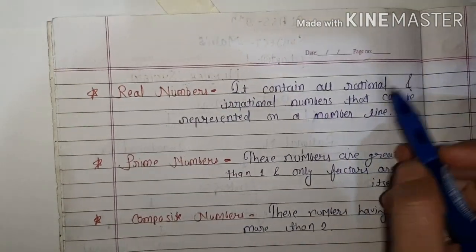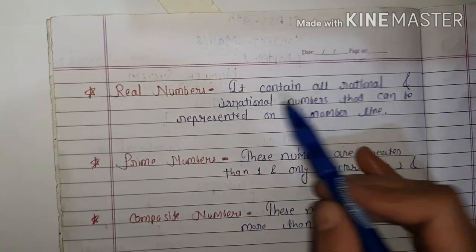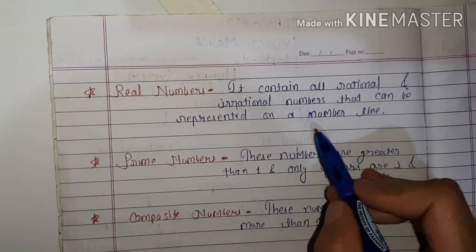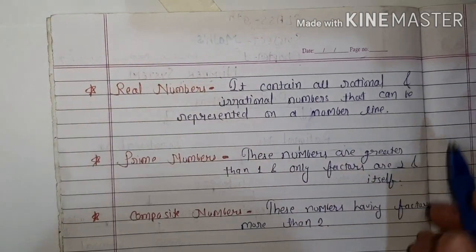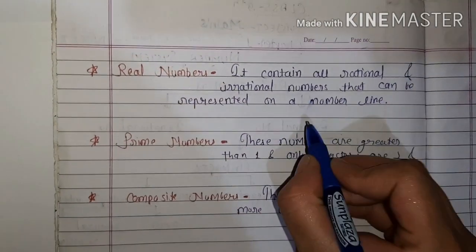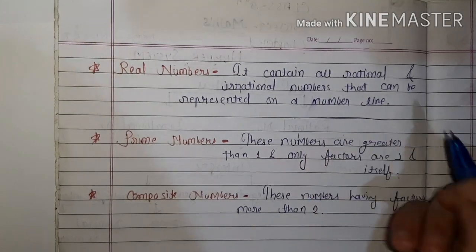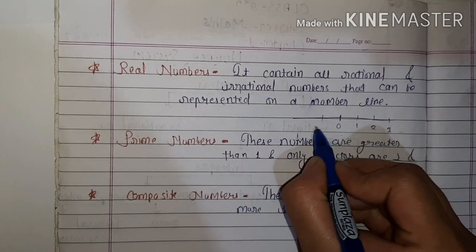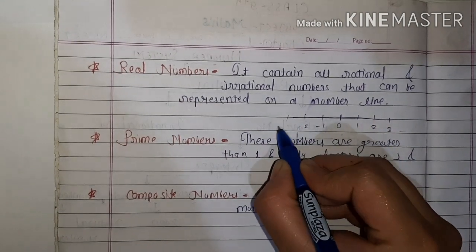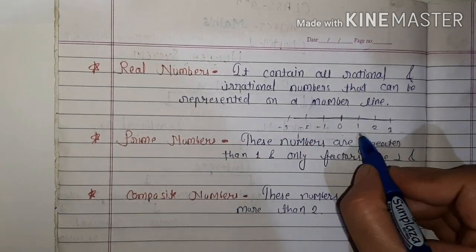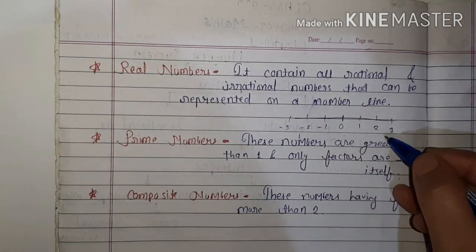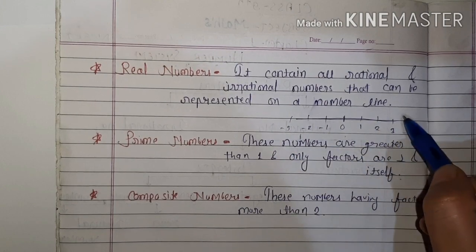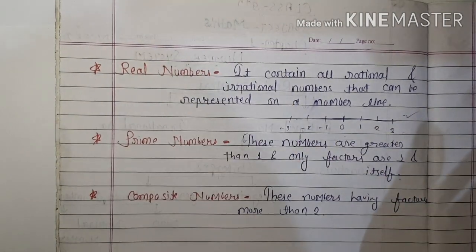What are real numbers? Real numbers contain all rational and irrational numbers that can be represented on a number line. On the number line we have zero, one, two, three and so on, and also minus one, minus two, minus three — meaning both negative and positive integers. All numbers representable on a number line are real numbers.